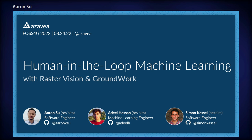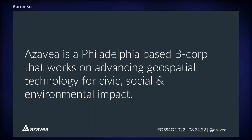In this talk we're going to give you an overview of some work we did incorporating two of our products into a human-in-the-loop machine learning tool. But first, a little bit about Xavia. We're a B Corp based in Philadelphia focusing on geospatial technology for civic, social, and environmental impact. We also have a strong commitment to open source software and try to contribute to the open source geospatial community whenever possible.